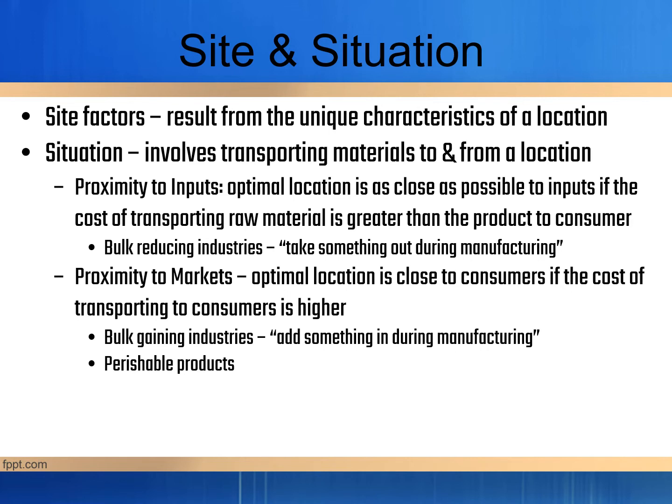Proximity to market means that the optimal location is close to consumers if the cost of transporting to consumers is higher. This would be true for bulk gaining industries — things that get heavier through production, like car manufacturing. You would want to produce those cars closer to the market because it's most expensive at the end of the process.